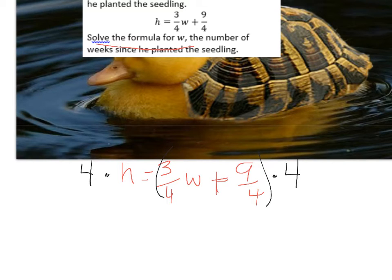All we need to do is multiply by the denominator, which is four. I'll multiply everything by four. On this side we have 4h equals - four times three-fourths is three, so 3w, and then nine times four is 36 divided by four is just nine. Oh my goodness, this is so much easier.